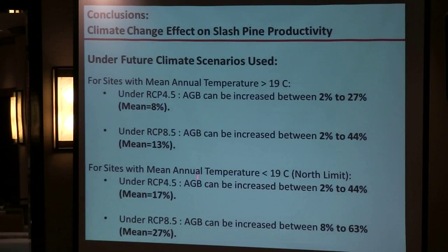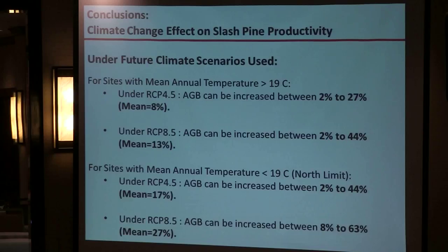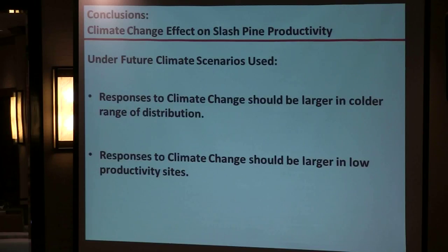In conclusion, on warmer sites we expect an average productivity increment of about 8% for RCP 4.5 and about 13% for RCP 8.5, though the range of variation is large. For cooler sites in the northern distribution, we expect larger effects — about 17% for one scenario and 27% for the other. The key takeaway is that the response to climate change should be larger in the colder range of distribution and larger in low-productivity sites.